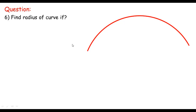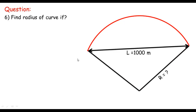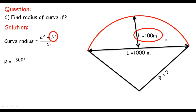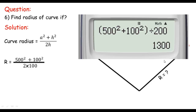Lastly, if we have to find the radius of the curve and the chord is known — say 1000 — and the mid-ordinate is known — say 100 — then what's the radius? There is a formula derived from the Pythagorean theorem: R = (A² + H²) / 2H, where A is half the chord. So R = (500² + 100²) / (2 × 100), giving us a radius of 1300 meters.